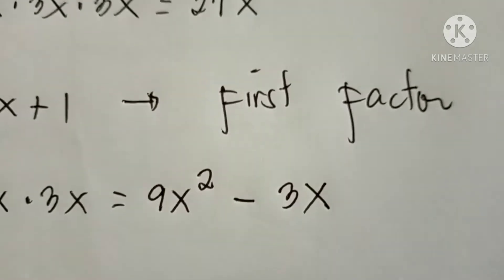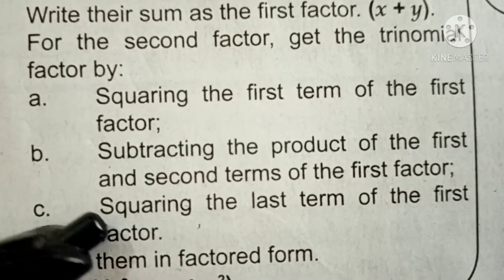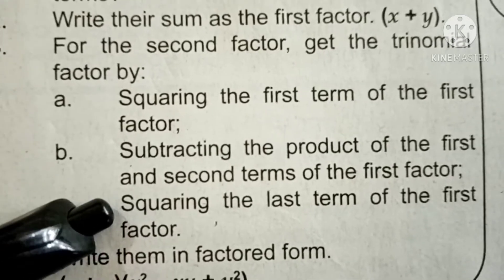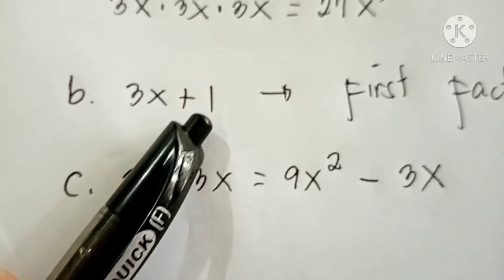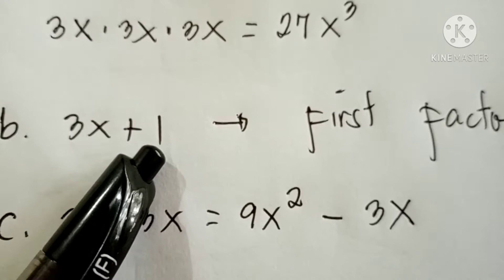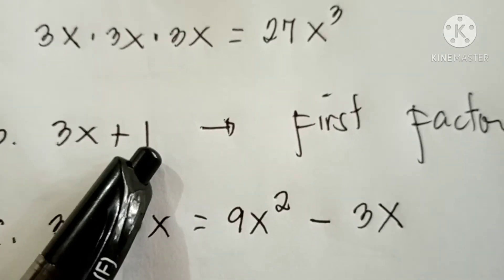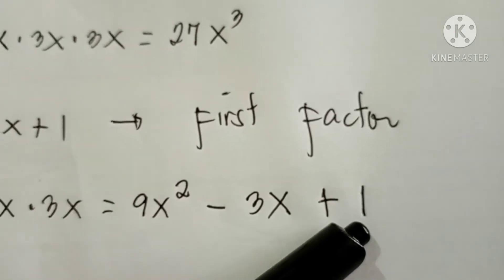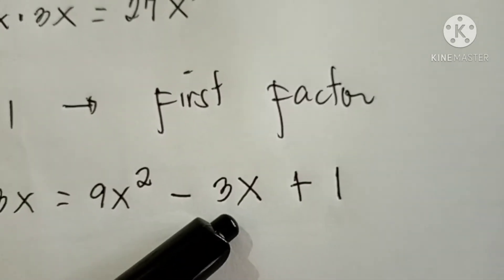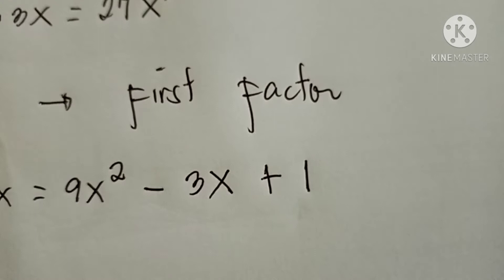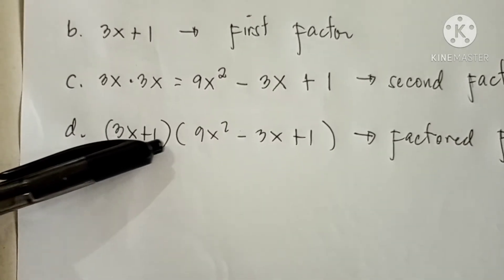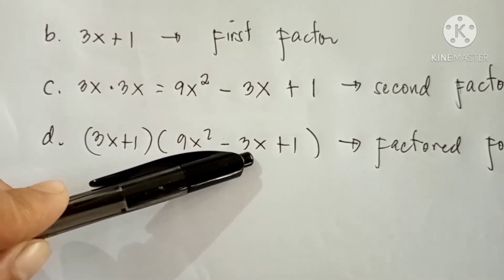We only need one more term. For the last term of the trinomial, square the last term of the first factor: 1 times 1 equals 1. So the third term is 1. Therefore, 9x squared minus 3x plus 1 is our second factor. For the factored form, we have (3x + 1)(9x² − 3x + 1).